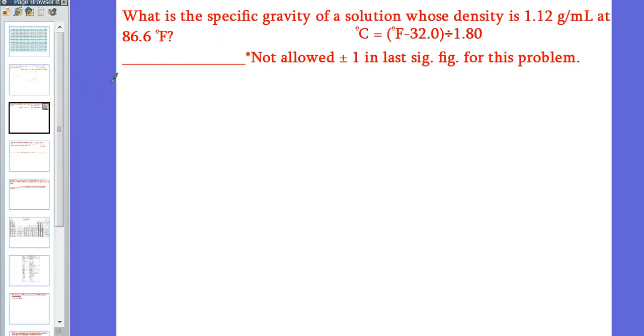Now, similar problem we have here, the same density as before. We have this temperature now as 86.6 degrees Fahrenheit. And in your notes, you should have, or it should make it onto your notes if it isn't by the time you take your final, a formula to go from Fahrenheit to Celsius. You're going to need that for your actual density of water at that temperature.